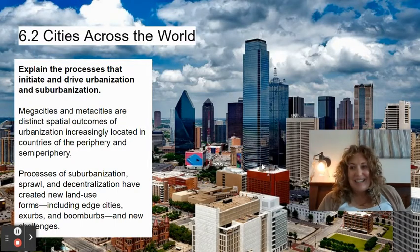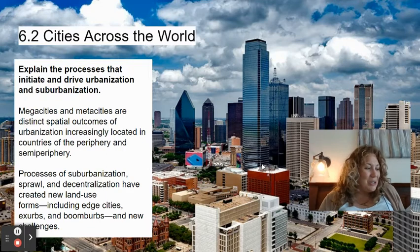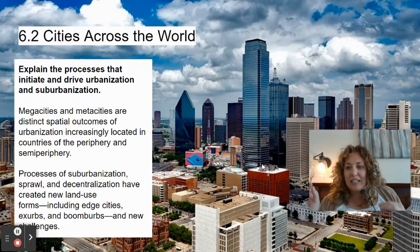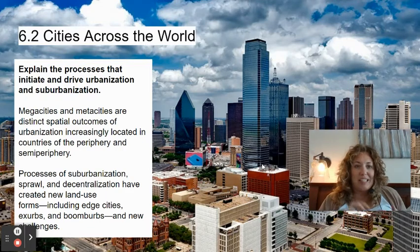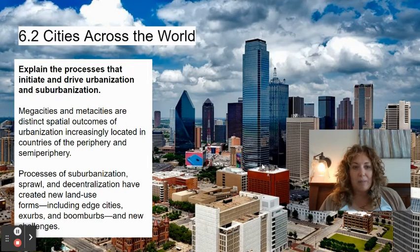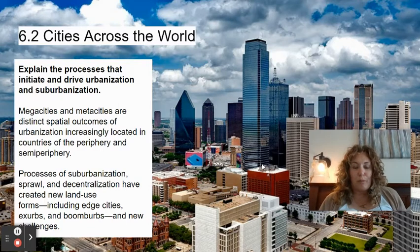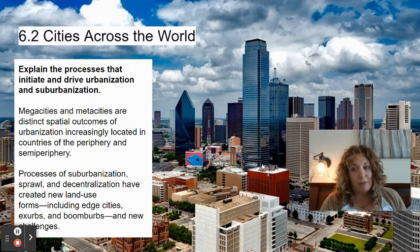6.2: Cities Across the World. This standard asks us to explain the processes that initiate and drive urbanization and suburbanization. Mega cities and meta cities are distinct spatial outcomes of urbanization, increasingly located in countries of the periphery and semi-periphery.